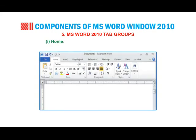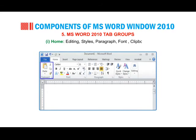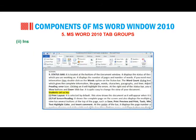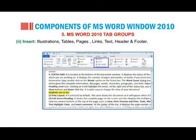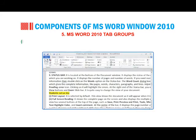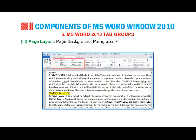MS Word 2010 Tab Groups. Home: Editing, Styles, Paragraph, Font, Clipboard. Insert: Illustrations, Tables, Pages, Links, Text, Header and Footer, Symbols, Flash. Page Layout: Page Background, Paragraph, Page Setup, Themes, Arrange.